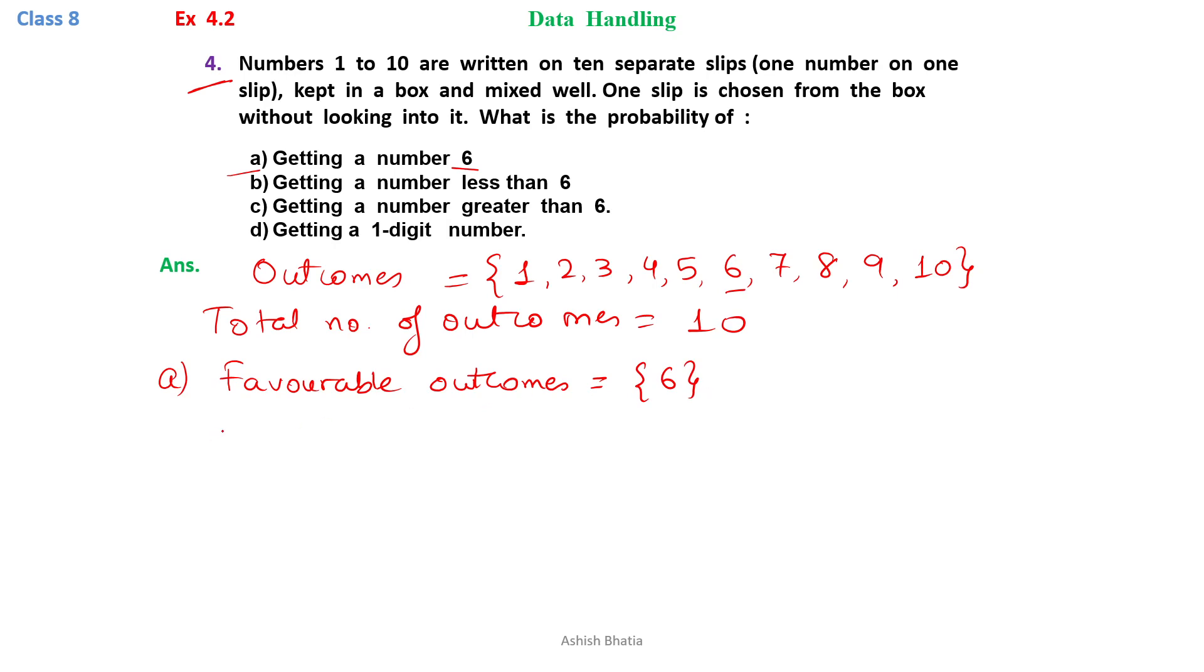We need to find out the probability. Probability of getting a number 6 will be equal to favorable outcomes, or we would say,